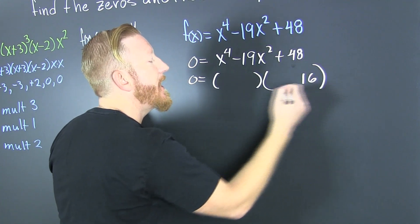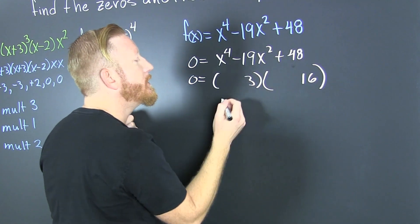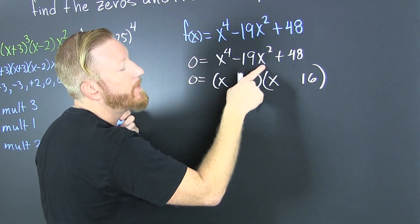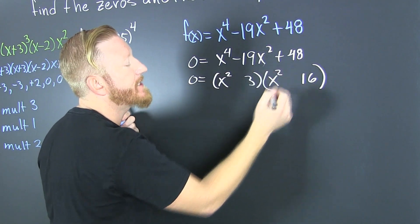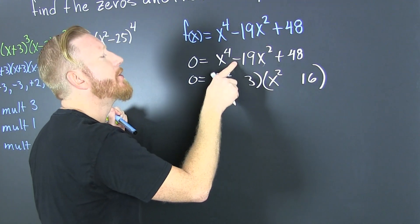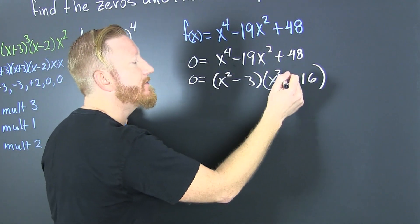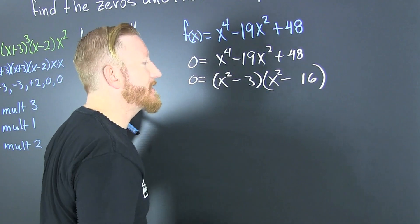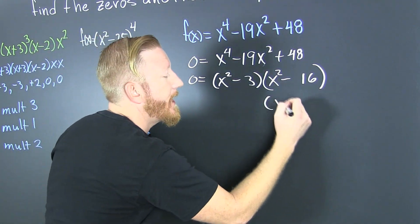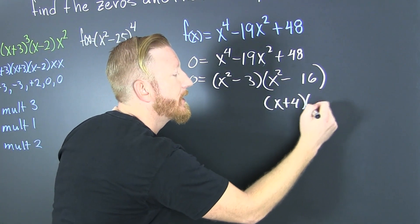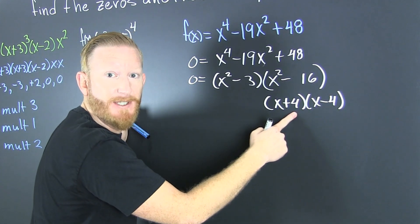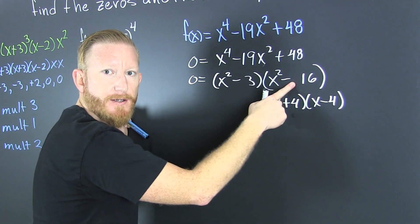16 and 3. It factors as (x² - 3)(x² - 16). The signs are the same and they're both negative, so that's -3 and -16. Now (x² - 16) factors further as (x + 4)(x - 4) — that's a difference of squares.